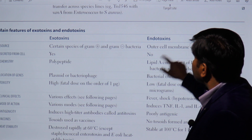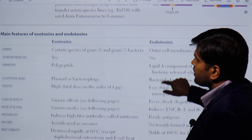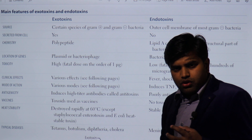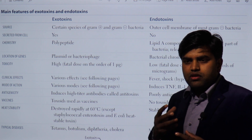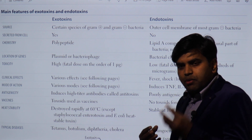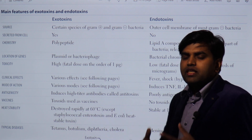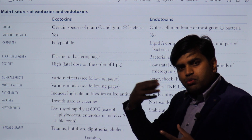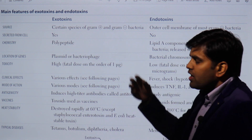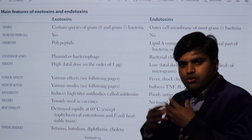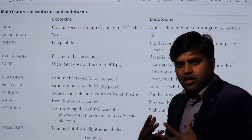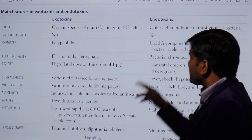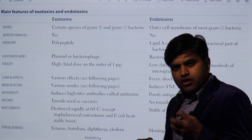Now the main feature of today's lecture, which we are on page 131: we are talking about the features of exotoxins and endotoxins. These are virulence factors — chemical substances released by bacteria that cause disease. They are of two types: exotoxins are released outside the bacterial cell into the environment, where they act on different parts of the body and cause disease through various mechanisms.